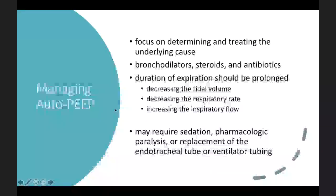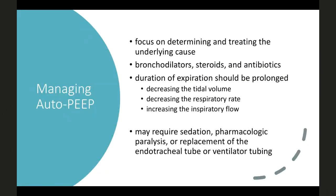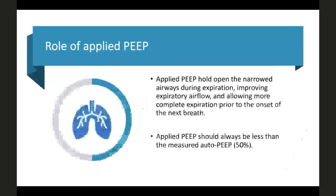Manage auto-PEEP by determining and treating the underlying cause with bronchodilators, steroids, and antibiotics. Prolong expiration by decreasing tidal volume, decreasing respiratory rate, and increasing inspiratory flow — so inspiratory time proportion is reduced. This management may require sedation, pharmacological paralysis, or replacement of the endotracheal tube or ventilator tubing. Applied PEEP holds open narrowed airways during expiration, improving expiratory airflow and allowing more complete exhalation before the next breath. Applied PEEP should always be less than the measured auto-PEEP — around 50–67%.